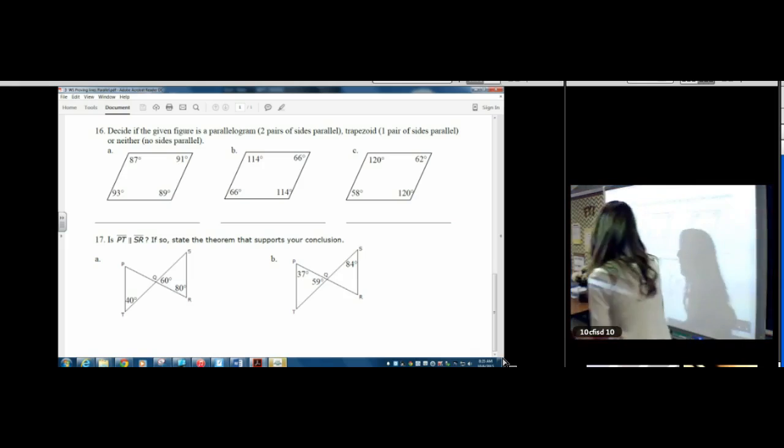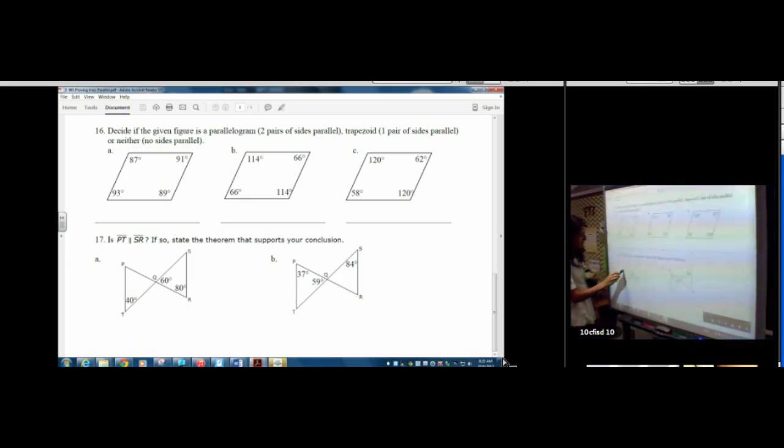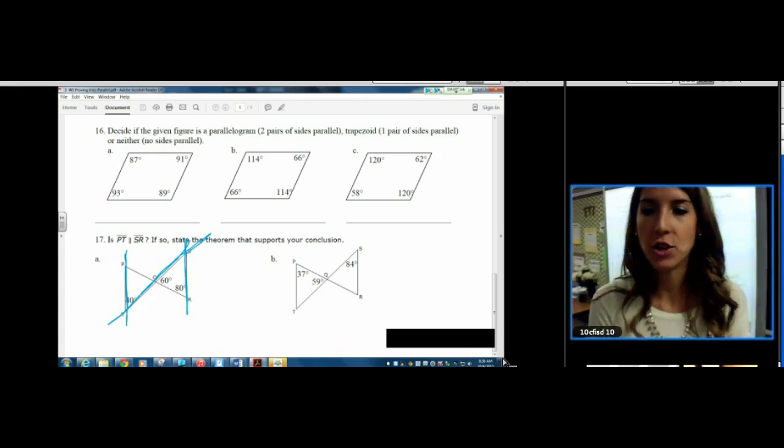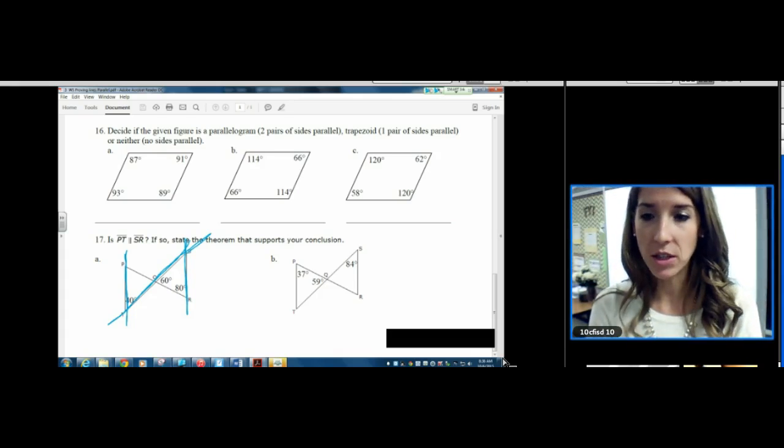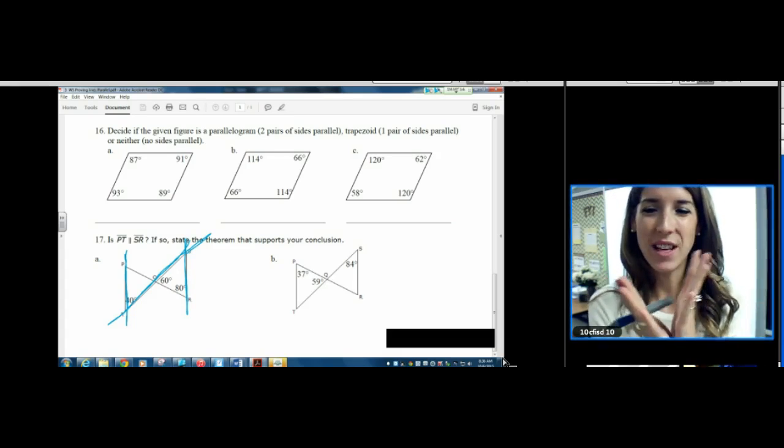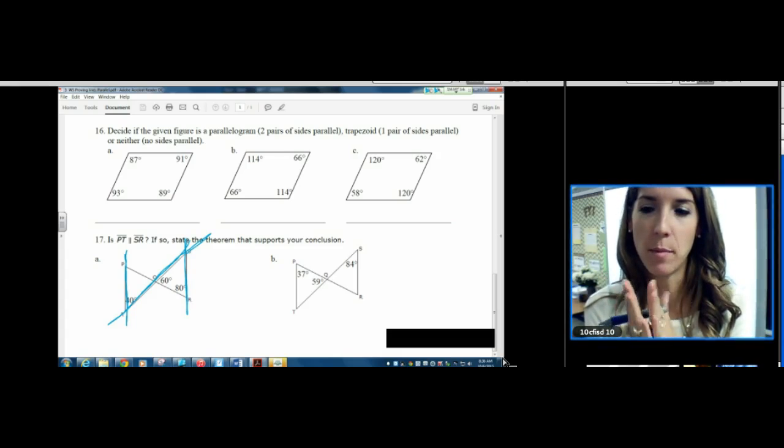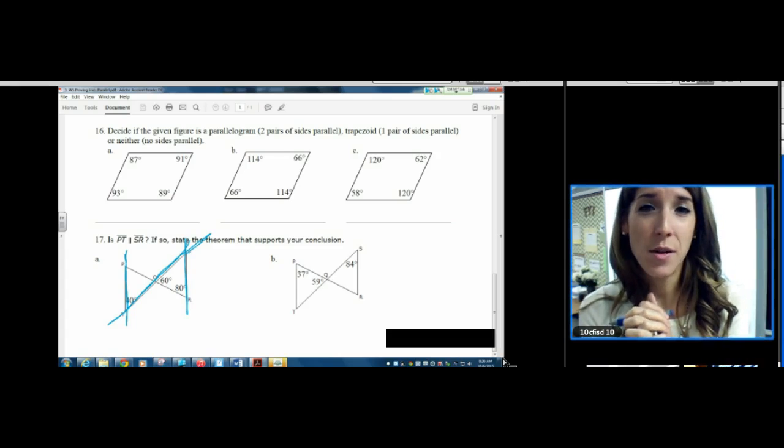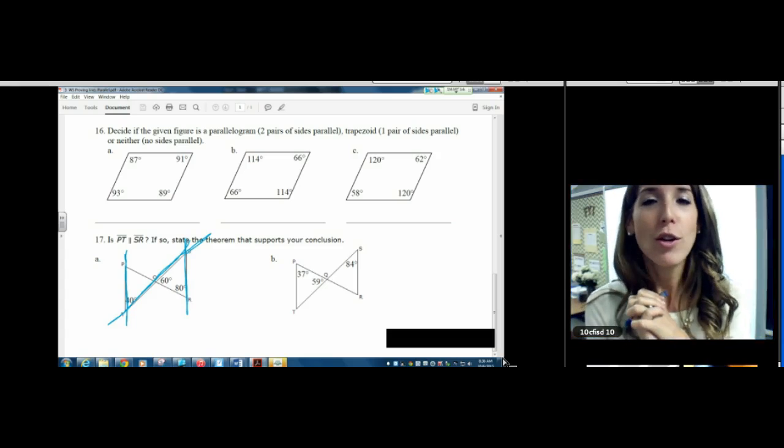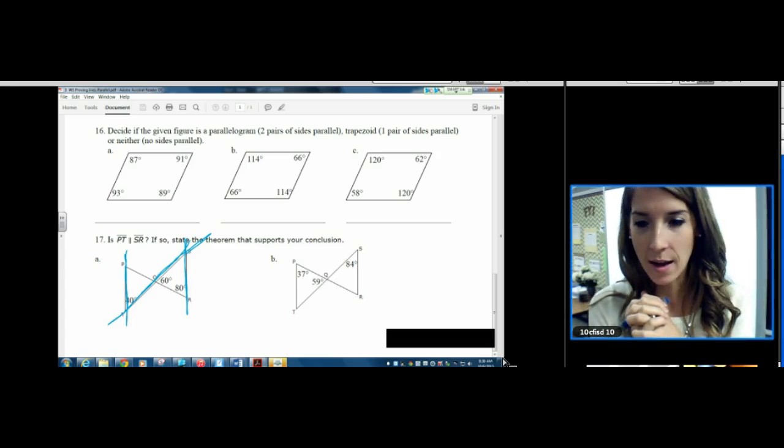Sometimes it helps to extend the lines that you're trying to focus on. PT and SR. There we go. So we've got parallel lines, and we have a transversal. I just picked one to be the transversal. I picked the one that used the forty degree angle, so I picked that one on purpose.